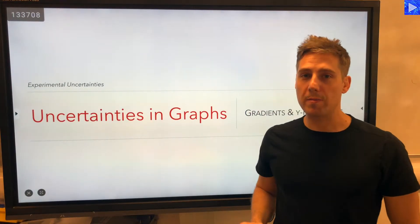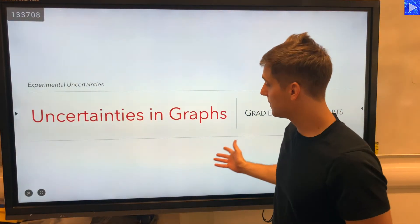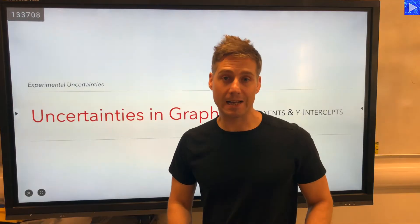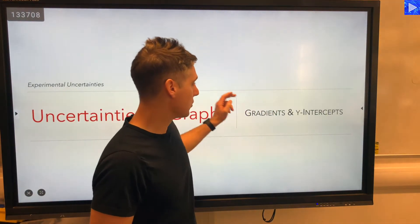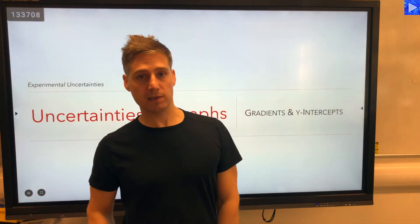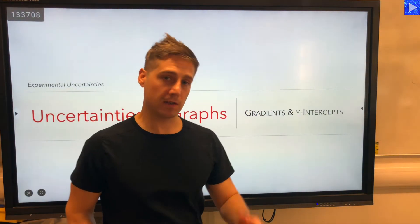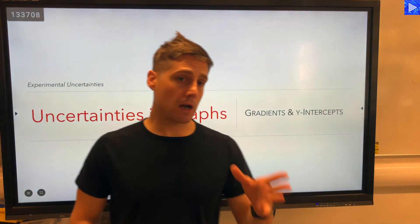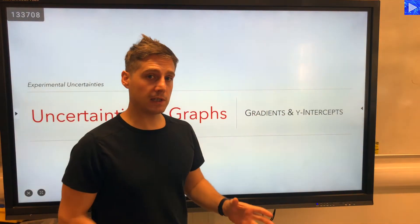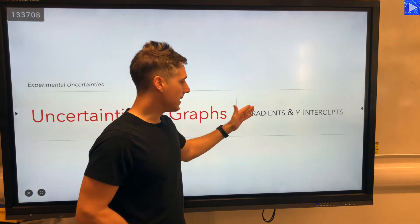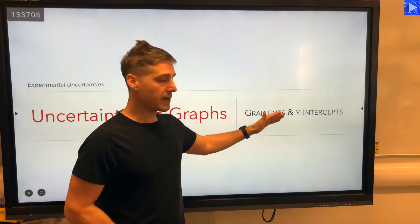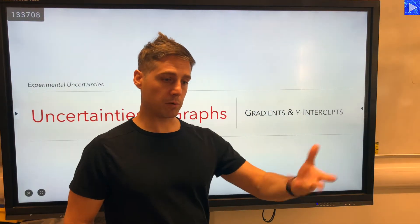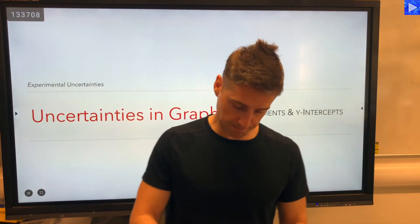I'm going to talk to you about uncertainties in graphs, and I'll specifically be focusing on gradients and intercepts at the end of the presentation. How do you determine the experimental uncertainty in the gradient and intercept that you've plotted from experimental data?